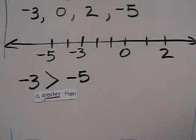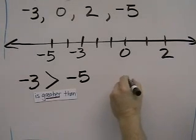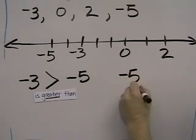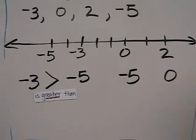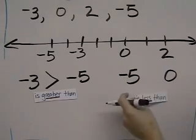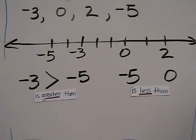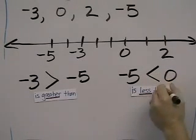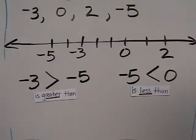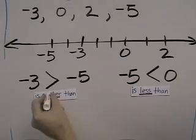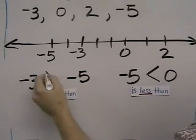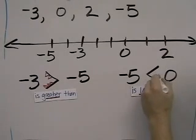If I wanted to say, how does negative five and zero compare? I would say negative five is less than zero and the symbol would look like this. You can imagine this to be an alligator mouth and the alligator mouth is always eating the bigger number.